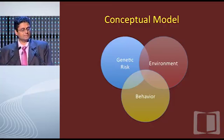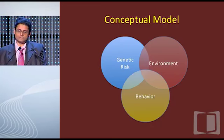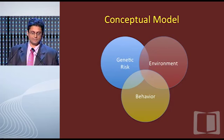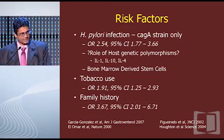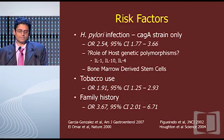Conceptually, any cancer can be thought of as having different factors. Genetic risks or genetic behavior may affect your risk. The environment — for example in gastric cancer, H. pylori — or behavior, such as smoking or salt intake. Risk factors for gastric cancer: we heard about H. pylori and the CAG-A strain.